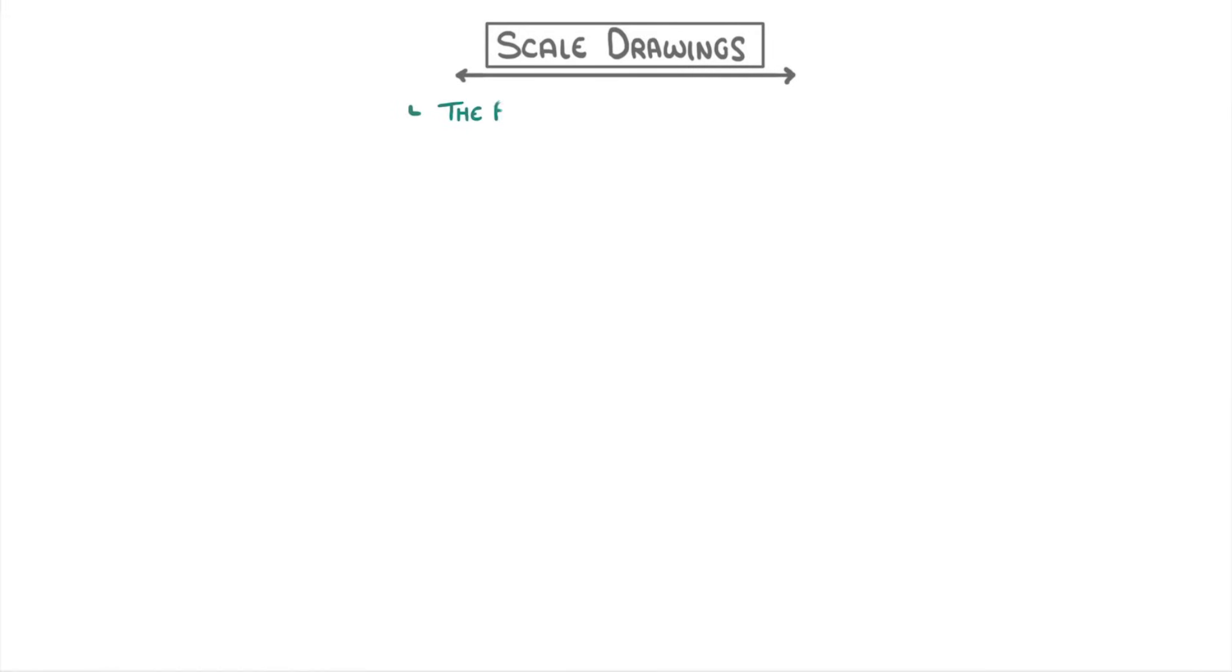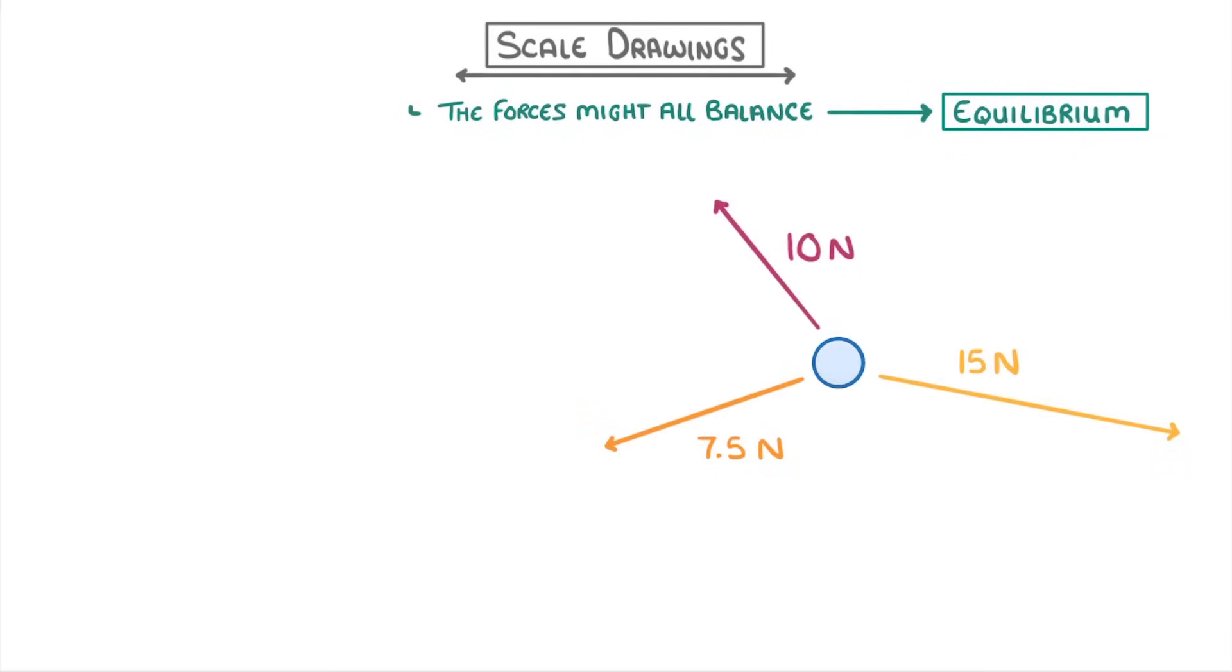In some cases, the forces might all balance, in which case the object will be at equilibrium. For example, if we had a particle that had these three forces acting on it, then to find the overall force, we just arrange the three arrows tip to tail like before. And because they all join up perfectly like this, it means there must be zero resultant force.